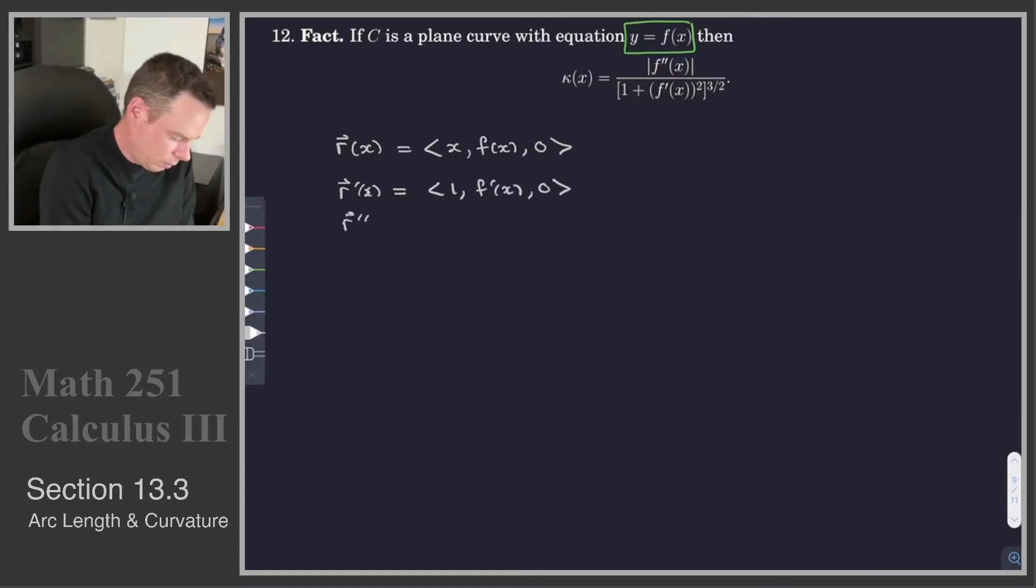We can take its second derivative, and that's going to be zero, f double prime of x, and zero. We're interested in also the magnitude of r prime of x, because that's going to be in the denominator of our curvature formula. So this is going to be the square root of 1 plus f prime of x all squared. Now you're starting to see these ingredients get assembled. And then the last thing we're going to need to do is take a cross product.